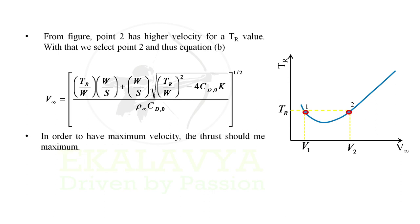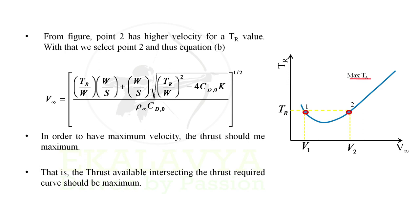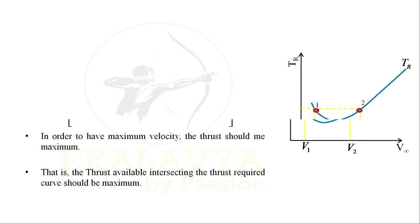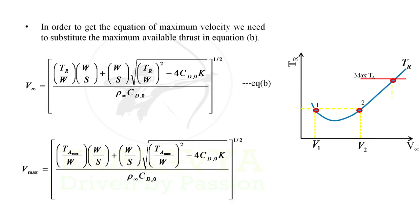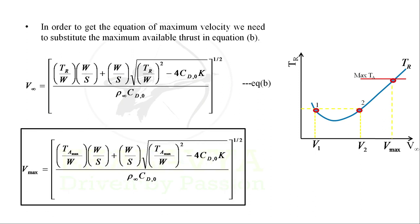In order to have maximum velocity, the thrust should be maximum — that is, the maximum available thrust intersects the thrust-required curve. To obtain the equation for maximum velocity, we substitute the maximum available thrust into equation B, giving: Vmax = [(Tmax/W)(W/S) + (W/S)√((Tmax/W)² − 4·CD0·K)] / (ρ∞·CD0) raised to the power of 1/2.